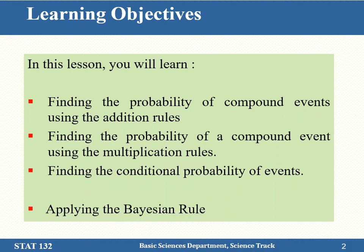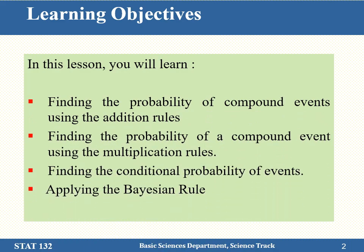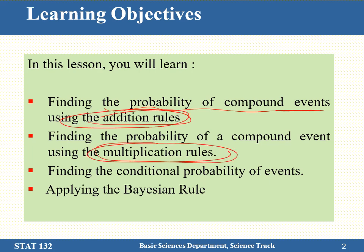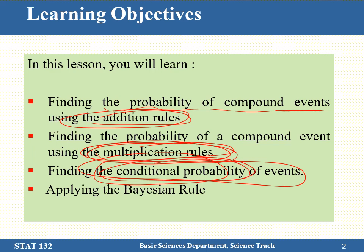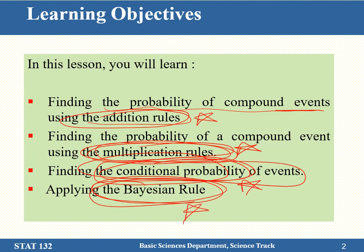In this lecture, we will learn finding the probability of compound events using the addition rule and the multiplication rule, and the conditional probability. This is an important one, and we will also apply Bayes' rule. So these are: addition rules, multiplication rules, conditional probability, and Bayes' rule.